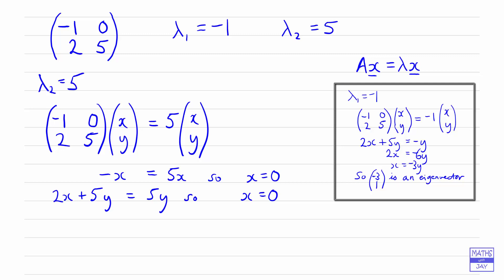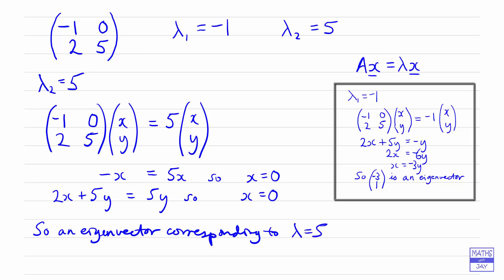So x must be 0, but y can be anything. An eigenvector corresponding to the eigenvalue of 5 has x equal to 0, and we can choose any value for y — the simplest being 1. So we have found two eigenvalues and an eigenvector corresponding to each of those eigenvalues.